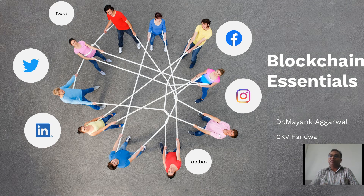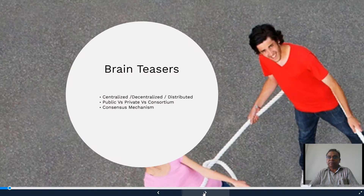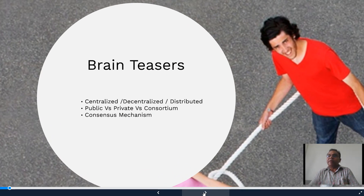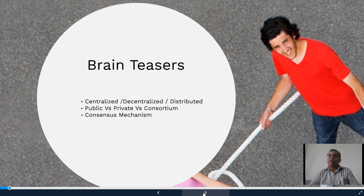To begin with, we will be seeing what are the different brain teasers — the jargons. One is the blockchain networks: centralized computing, decentralized, or distributed. We have already seen that blockchain is a decentralized and distributed computing, but what is basically the difference between these three terminologies still needs to be understood in a much clearer manner. Similarly, what is public, private, and consortium platform, and what are the different consensus mechanisms. Following these three videos we will be able to understand the three most difficult concepts of blockchain.